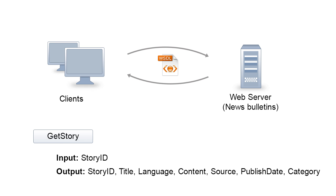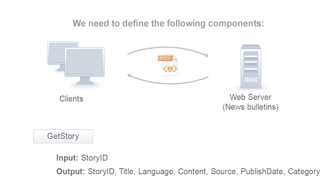The second operation is getStory, which requests the actual content of a story. As input, the operation takes the story ID, and as output the operation returns the story ID, title, language, content, source, publish date, and category.